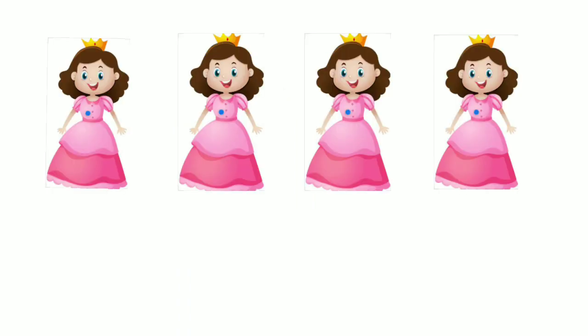Now shall we go for missing numbers? What's the picture? Can you see a fairy? How many fairies are there? One, two, three, four — totally four fairies. Look down at the numbers: 1, after 1 is 2, after 2 a number is missing, then the last one is 4. So: 1, 2, a number is missing, then 4.